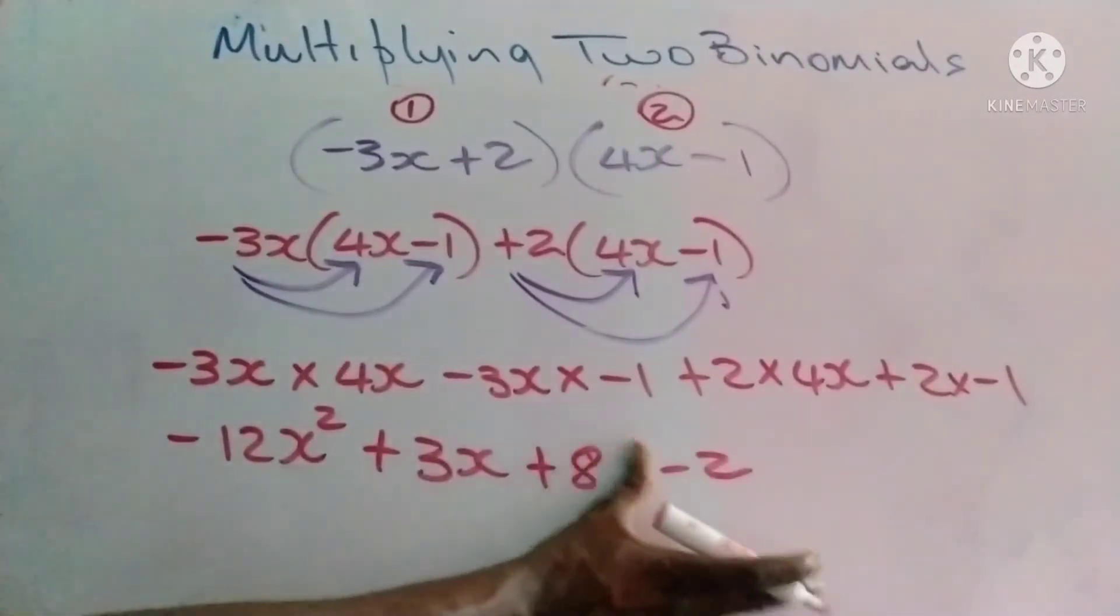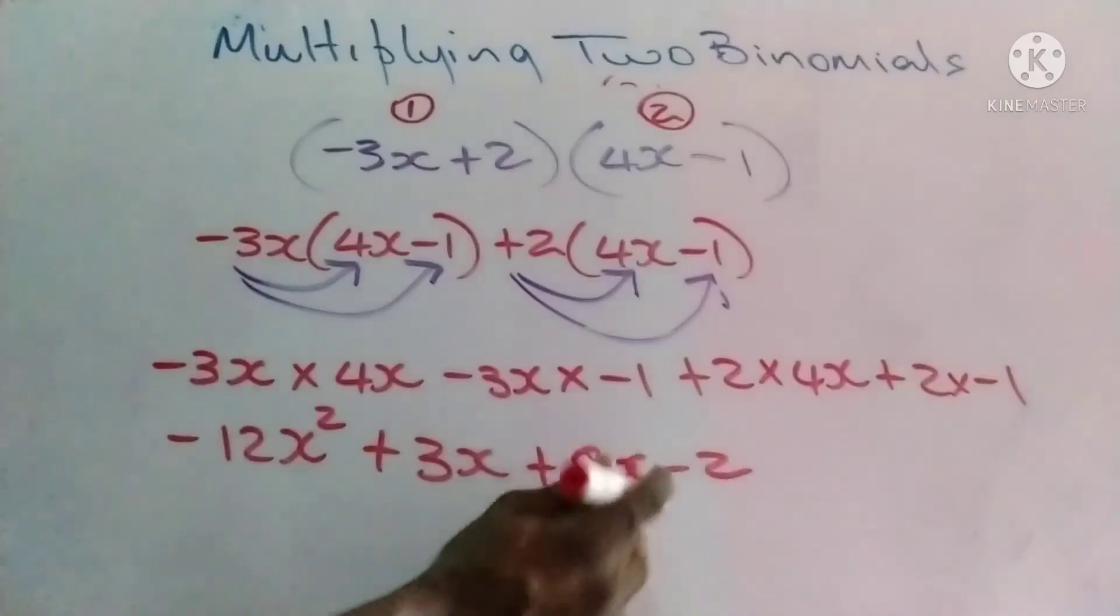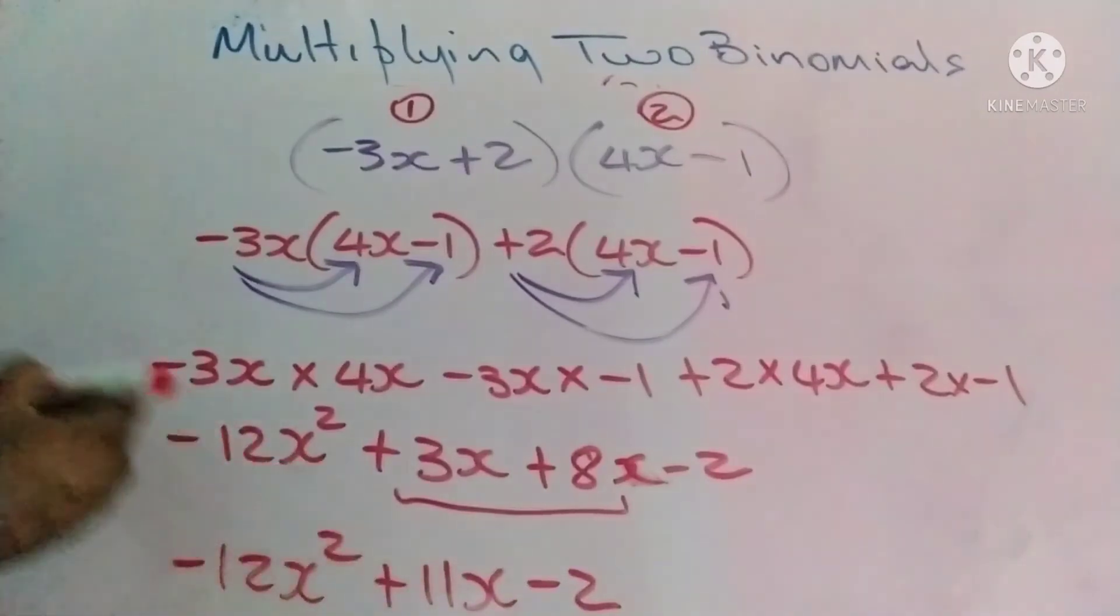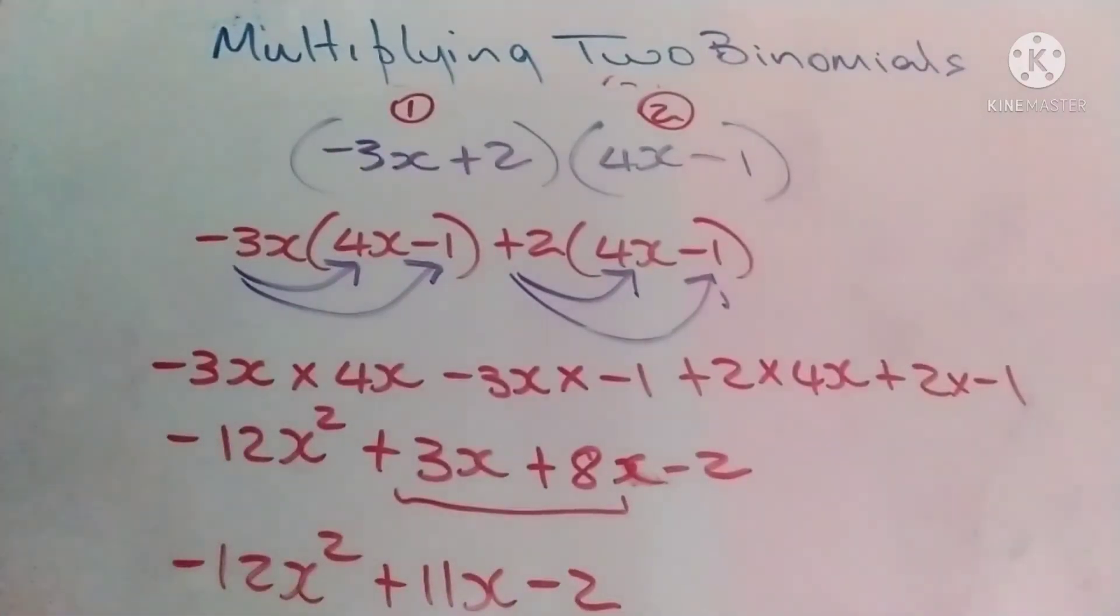Let's do our final check. We have like terms here again. So we write negative 12x² plus 11x minus 2. And there it is. We have multiplied two binomials very simply. I trust you enjoyed that.